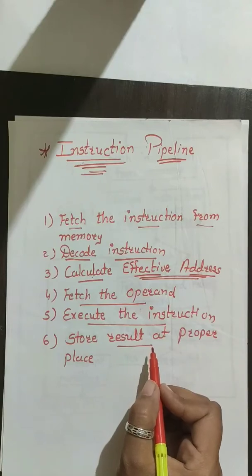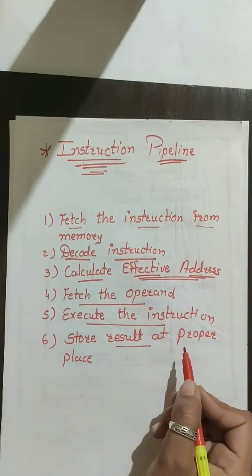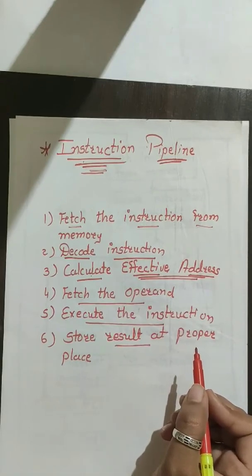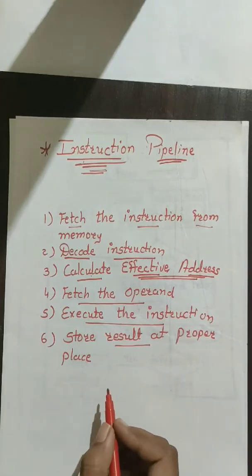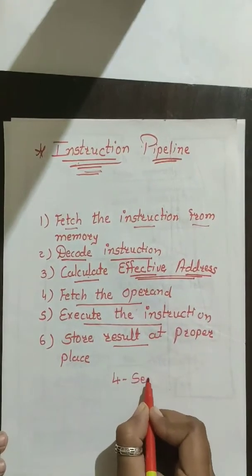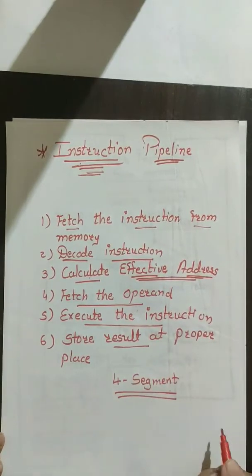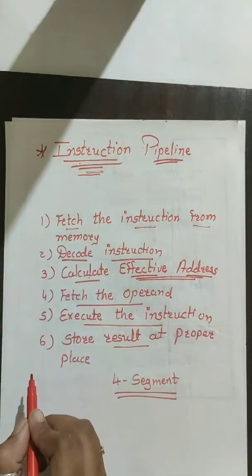The last step is to store the result at the proper place — for example, storing it in memory. Now what we are going to do is prepare a pipeline, meaning we are going to create segments for this instruction execution. We will use four-segment pipelining — that is, instruction pipelining. This means we need to divide the six steps into four steps, merging some of the operations.